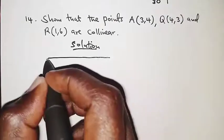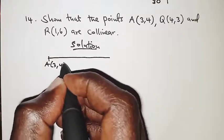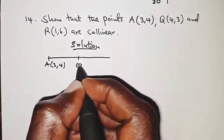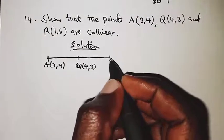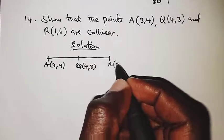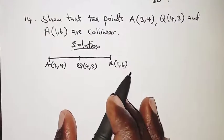We have point A(3,4), point Q(4,3), and finally point R(1,6). In order to show that the points are collinear, what you're going to do is have a pair of vectors from this particular line segment.